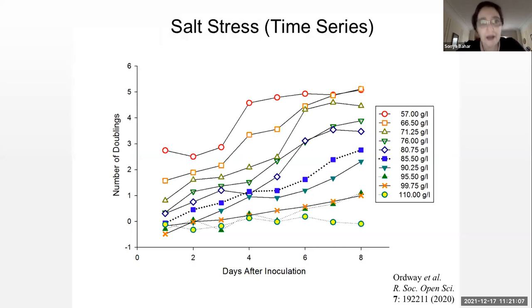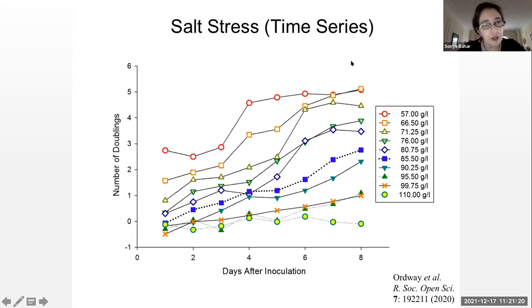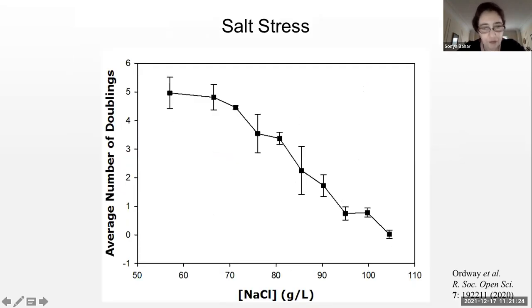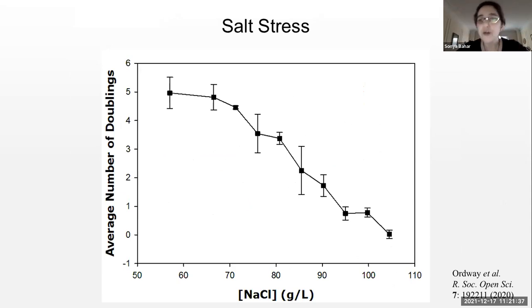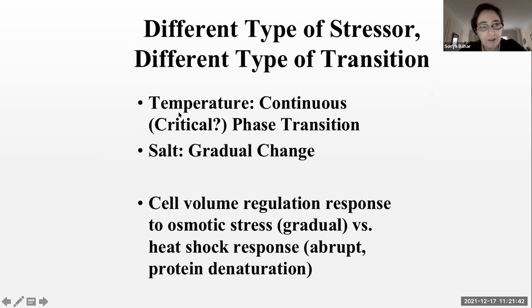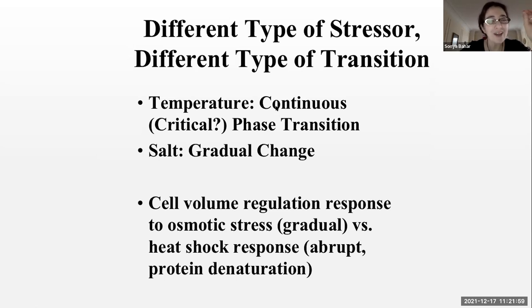We also looked at salt stress. Higher salt makes the cells less happy — no big surprise. But there's no big split in the behavior. If you plot number of doublings versus the control parameter, you see a very gradual change rather than a sharp phase transition-like change. So we're seeing something that's phase transition-like for one stressor and a much more gradual change for another. Biologically that probably makes sense because the biological response to temperature change is much more abrupt, whereas there are more mechanisms for buffering the response to changes in osmolarity from changes in salt concentration.